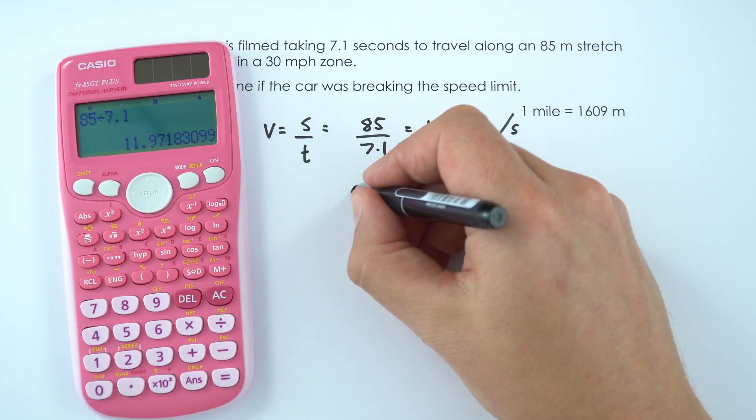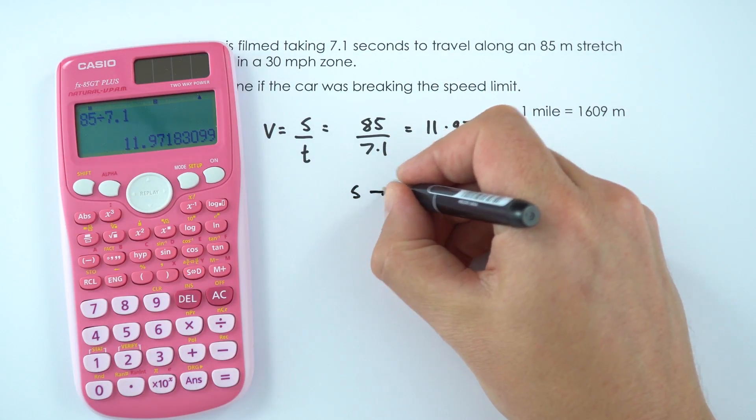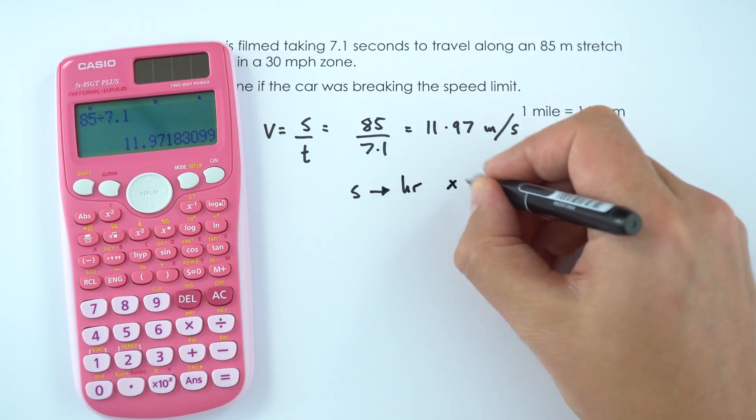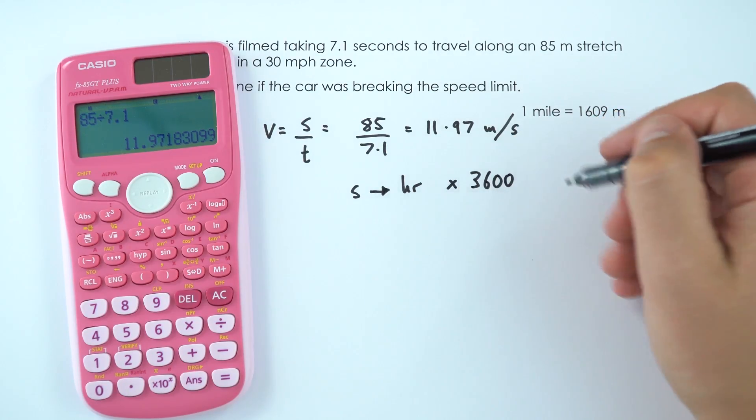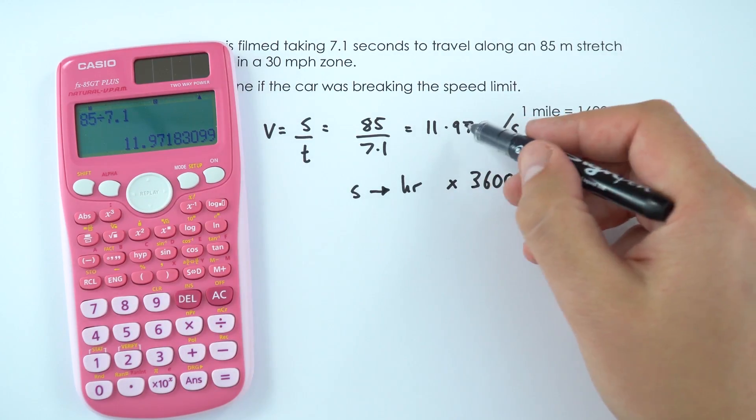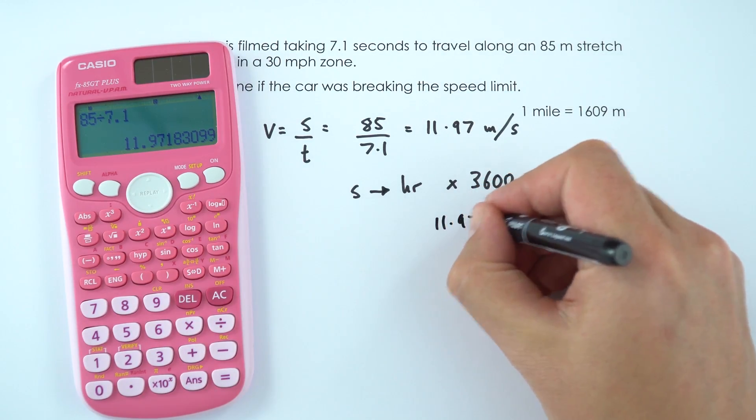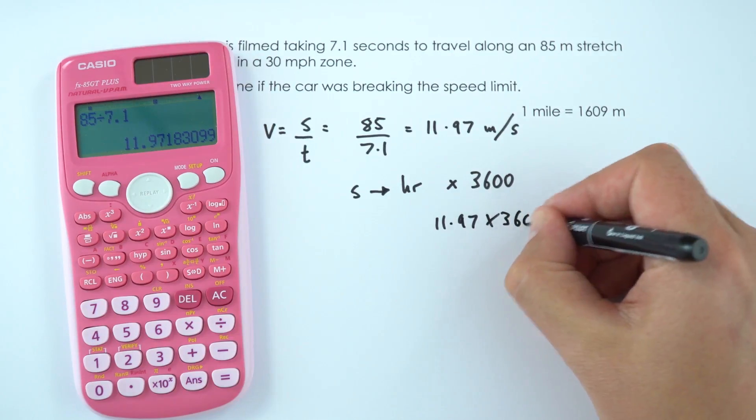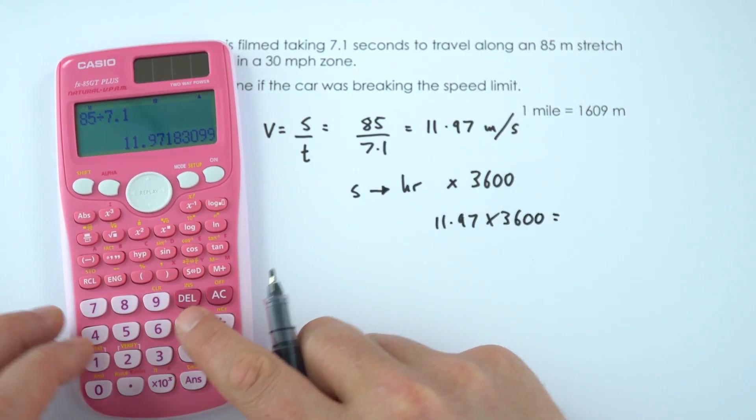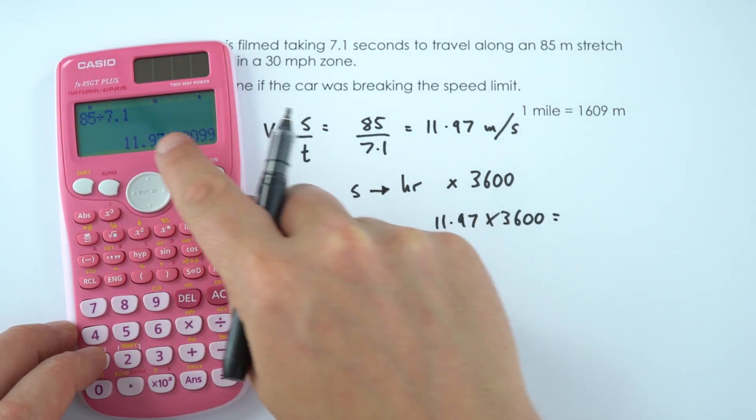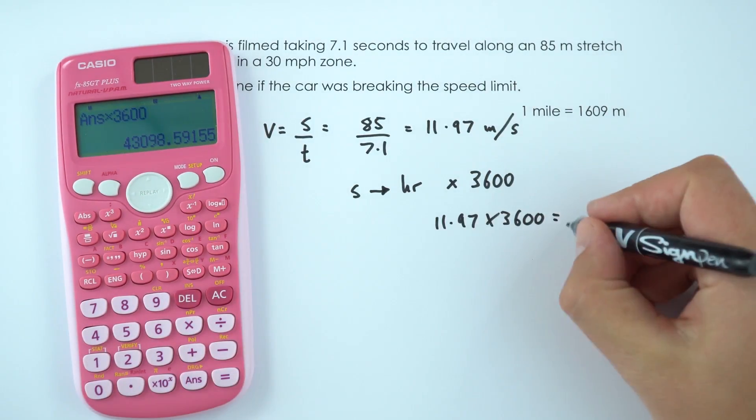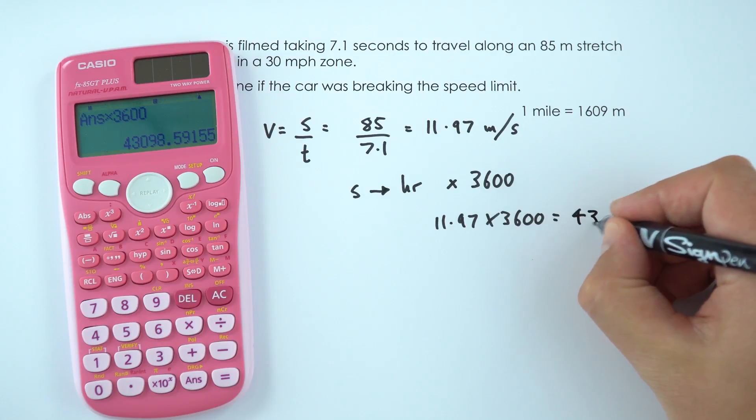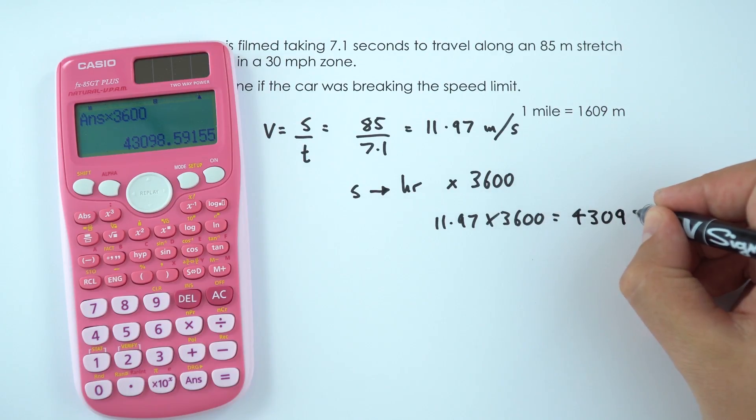Now the first thing we're going to do is convert this time from seconds into hours by multiplying by 3600 because there are 60 seconds in 60 minutes. So if I take 11.97, multiply it by 3600, I'm just going to take the raw value that I've got in my calculator, times it by 3600. That means the car actually goes 43,099 metres per hour.